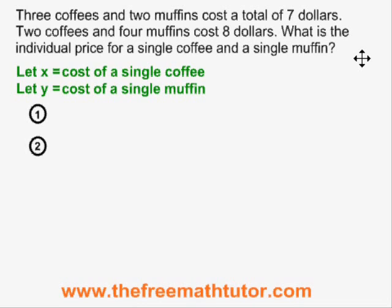Three coffees and two muffins cost a total of $7 must mean, because of the way I defined my variables, 3x plus 2y equals 7. The second equation is drawn from the information two coffees and four muffins cost $8. It works in a very similar way, so my equation is 2x plus 4y equals 8.